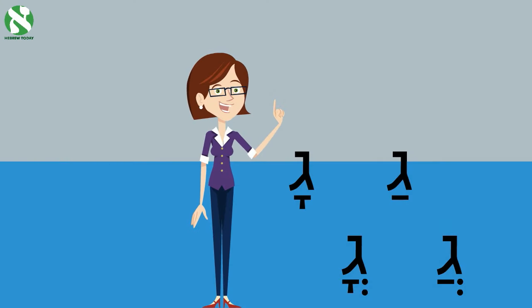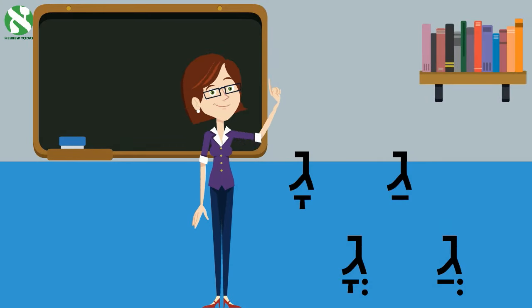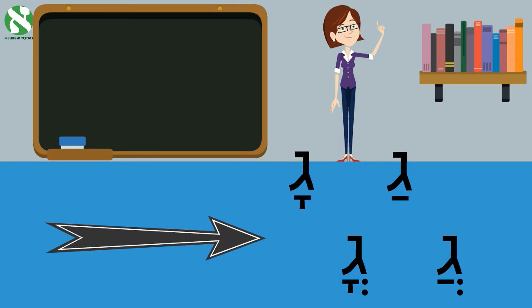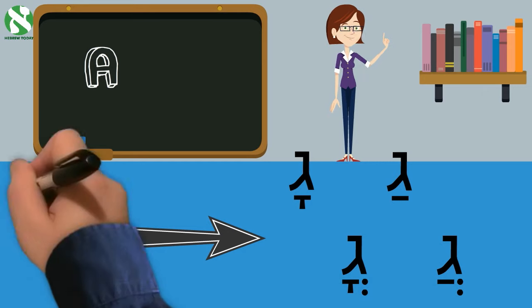The truth is, there are some small nuances in the sounds made by these different symbols. But nowadays they are not used and in fact most Hebrew speakers do not know how to tell them apart. So anytime you see any of these symbols, you now know that they make the A sound. And when they come under the letter Gimel, they make the GA sound.